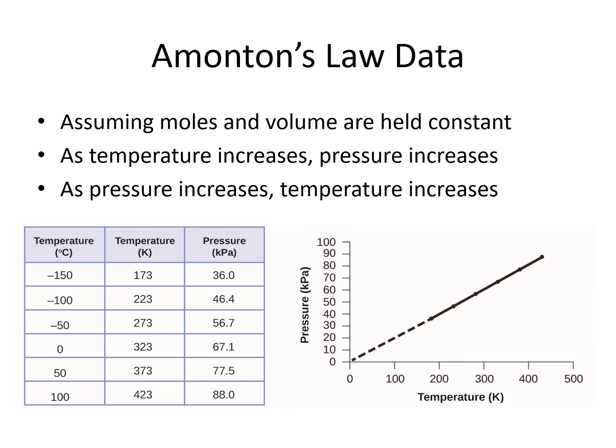We can graph the data for Amontons' law and we should get a nice straight line. We could put pressure on our y-axis and temperature in Kelvin on our x, or the other way around. Either way, we should get a straight line — as the temperature goes up, the pressure goes up, and vice versa.